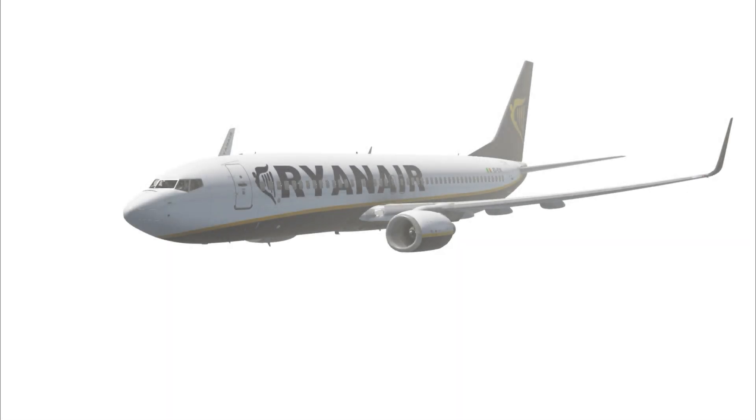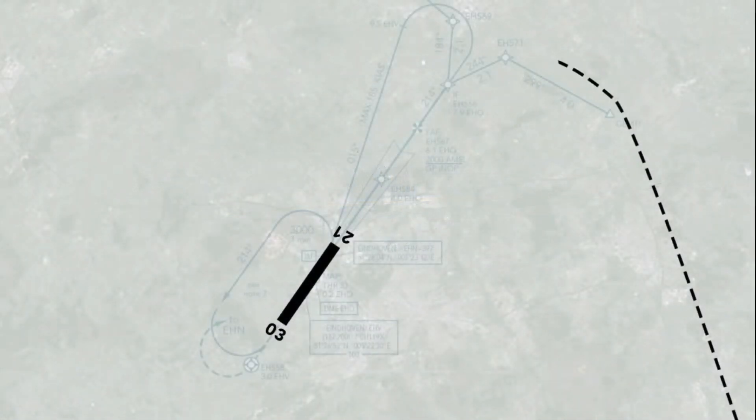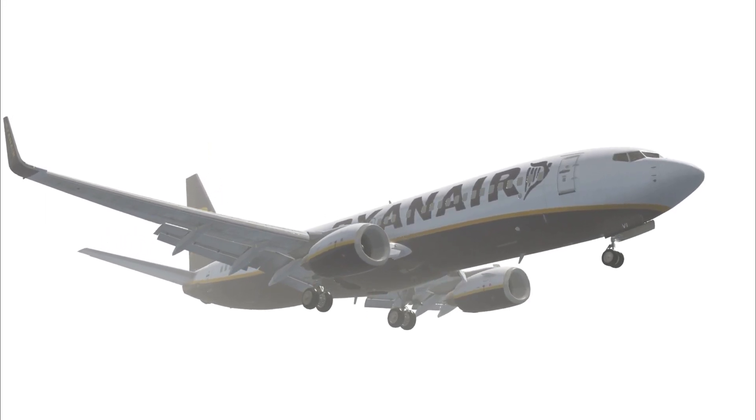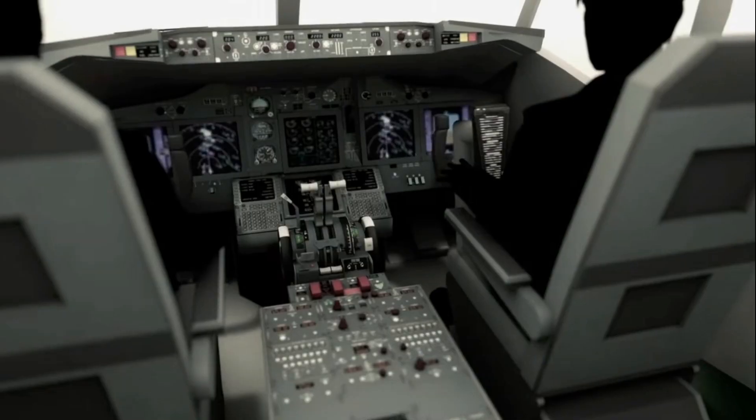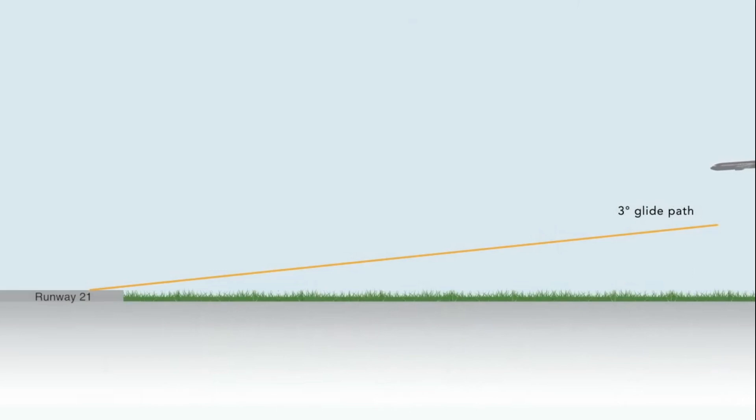On the 31st of May 2013, a Boeing 737-800 passenger aircraft on the approach to Eindhoven Airport in the Netherlands encountered a pitch-up upset and subsequent stick shaker activation. This potentially dangerous situation occurred while the aircraft was flying on autopilot and trying to capture the ILS glide slope to runway 21.